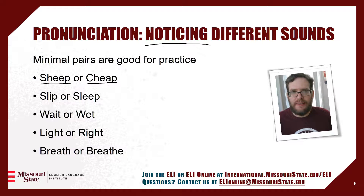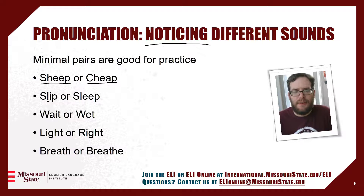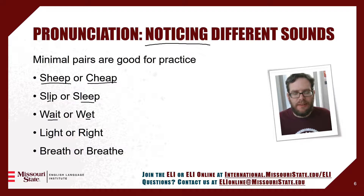Those were different consonant sounds. Now these are different vowel sounds. This one is very difficult — sometimes people call it the short I sound, sometimes the phonetic symbol is used, but it's the I sound. And here we have the long E sound. So here we have slip and sleep. Here we have long A and short E: wait and wet. Then light and right — that's the initial R and initial L sounds.